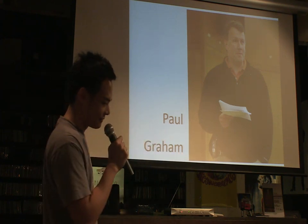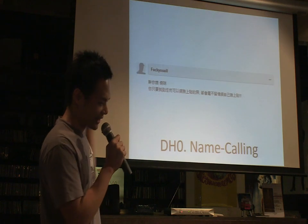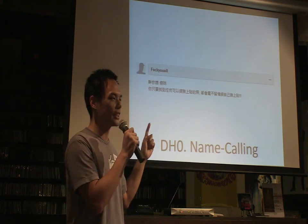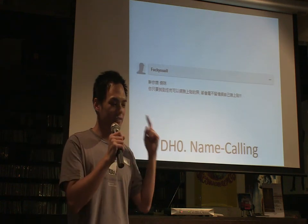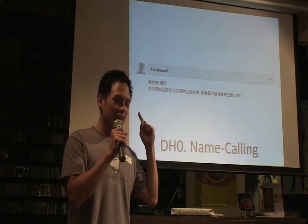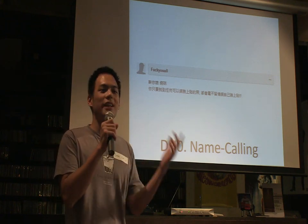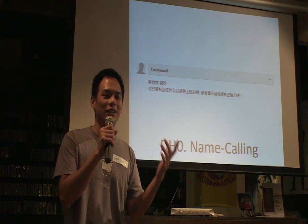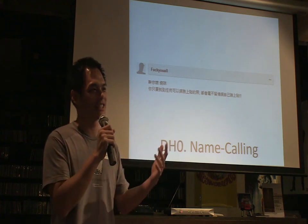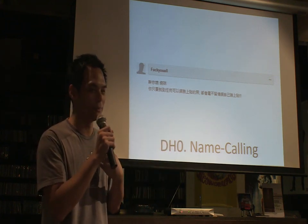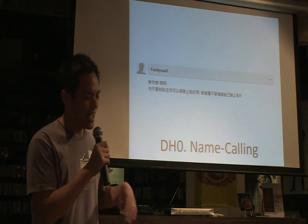The hierarchy of disagreement. The lowest level is called name calling. It usually goes like this: 'F*** you, Jamie. You're a [insult].' It's really not adding much to the conversation, and it's aimed toward me personally — so it's not working.